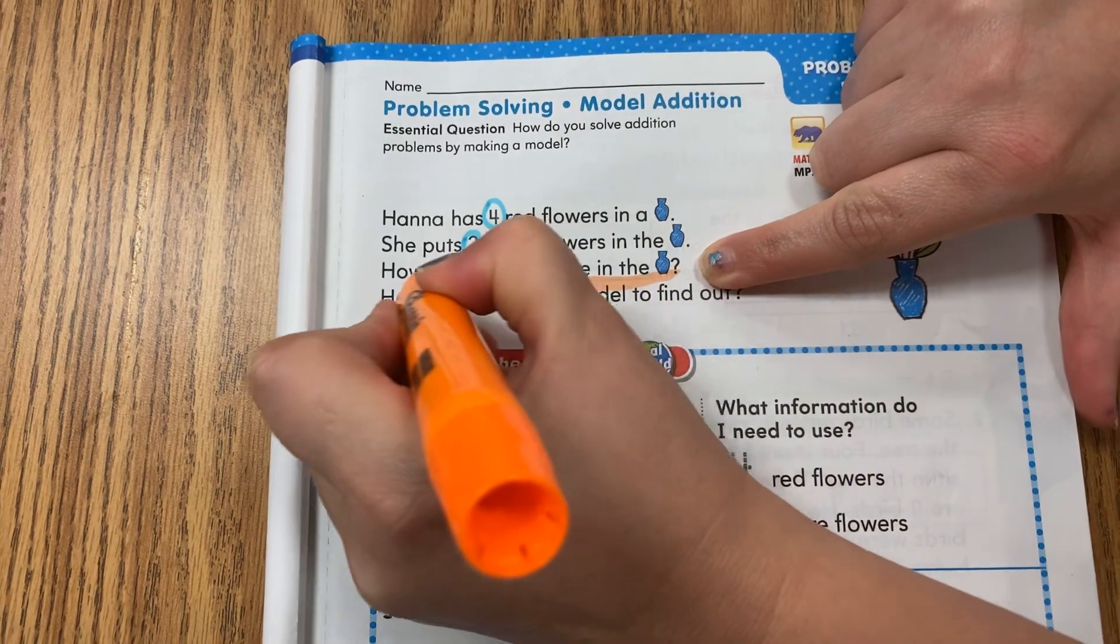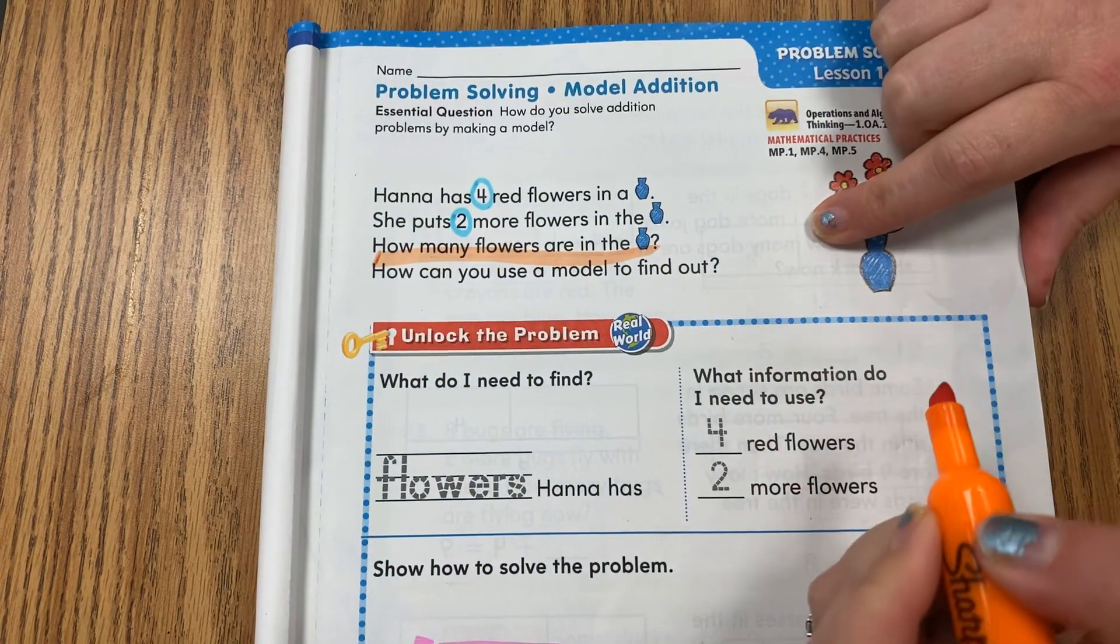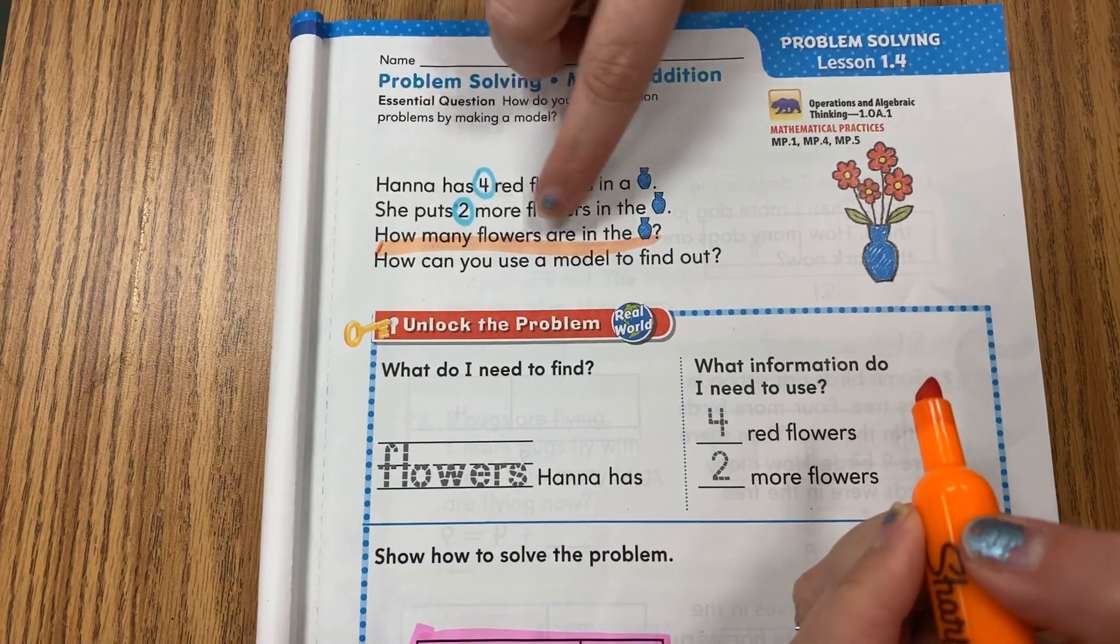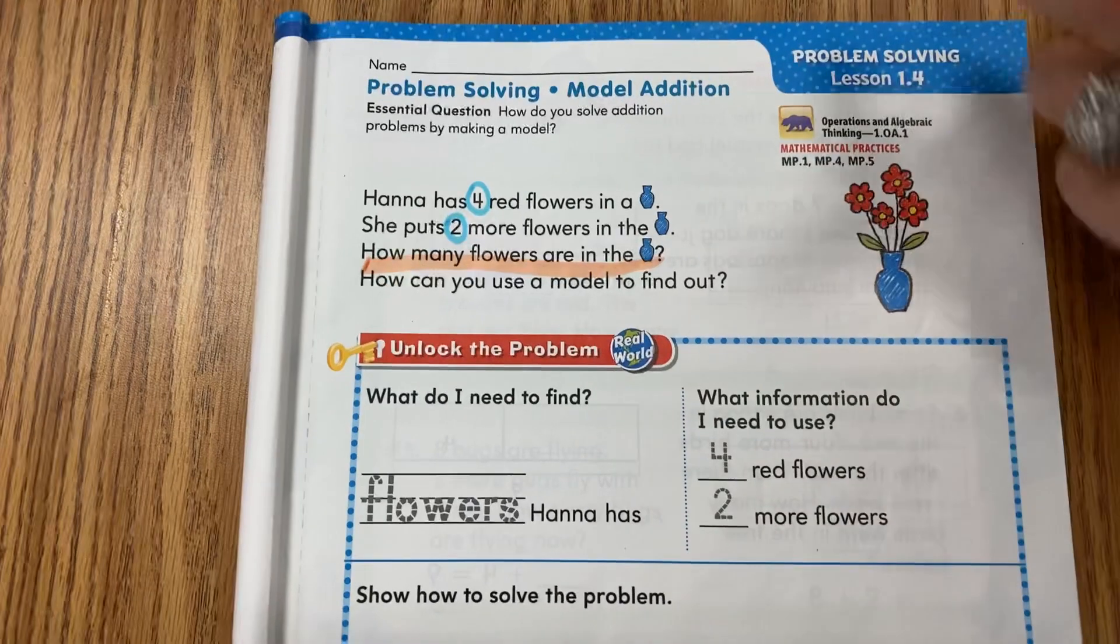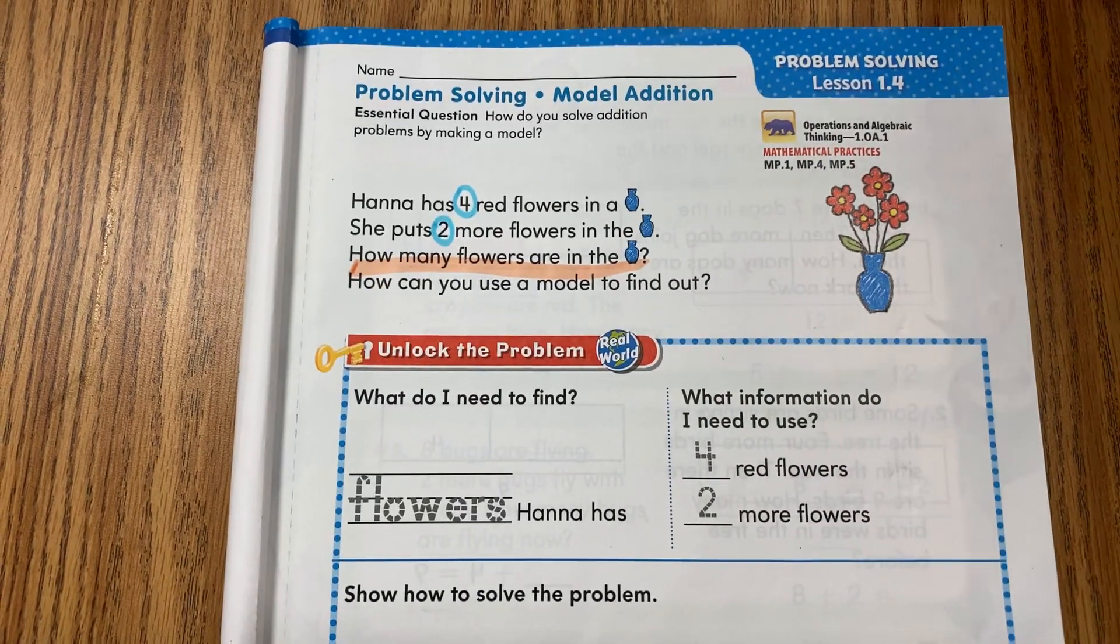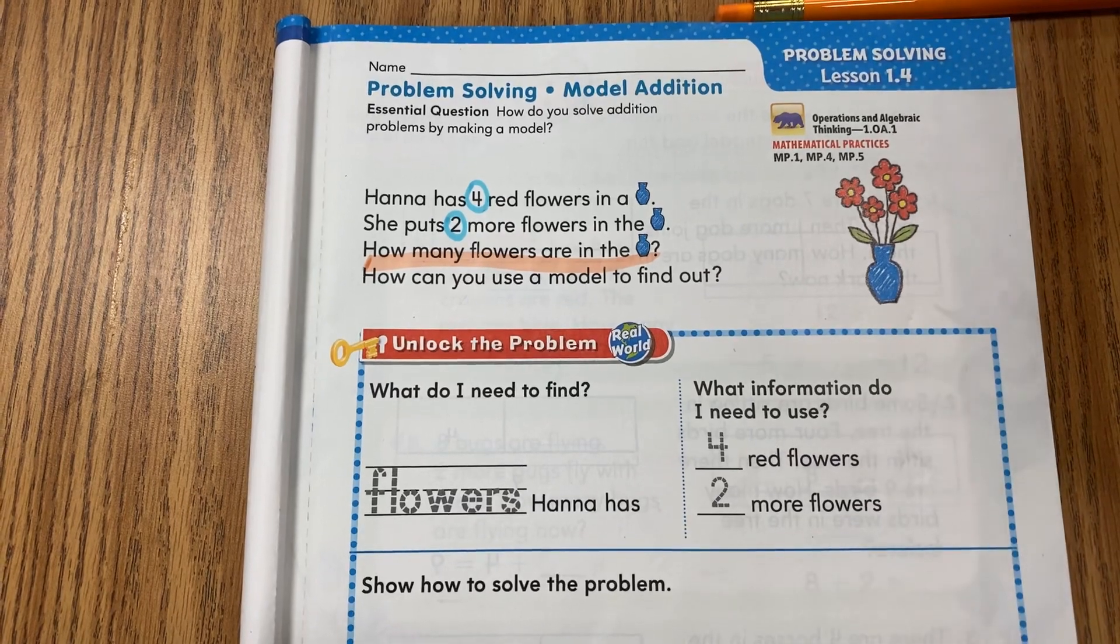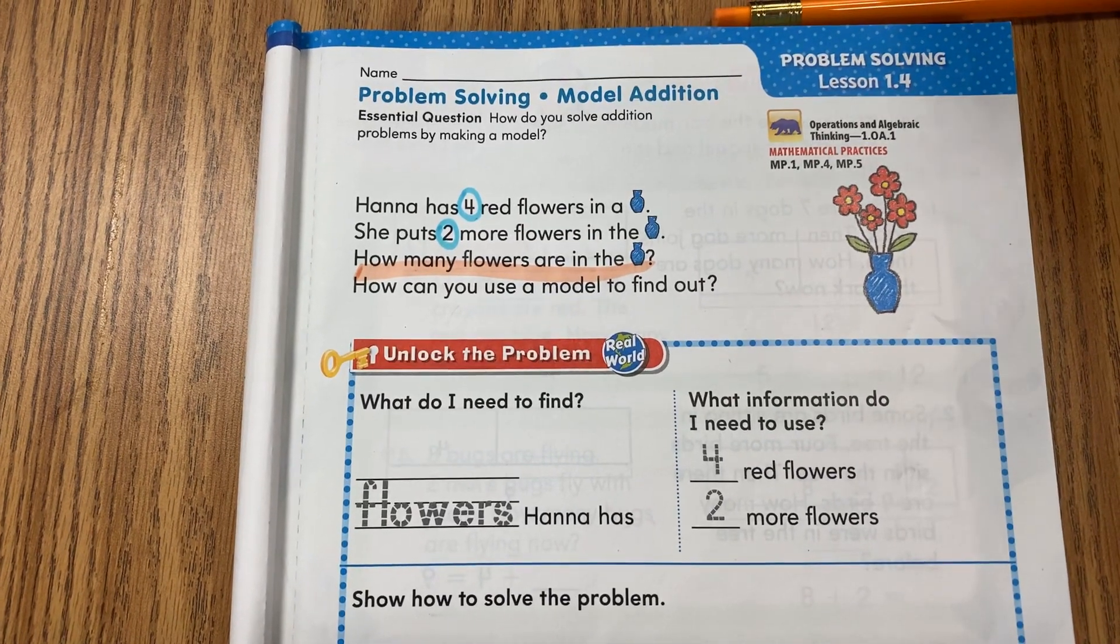Underline my question. As I said, you start at your question mark and go all the way back to your capital and period. That will tell you what your question is: How many flowers are in the vase?